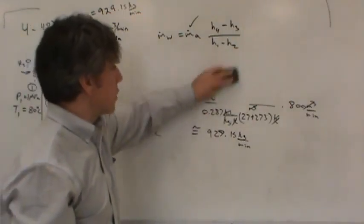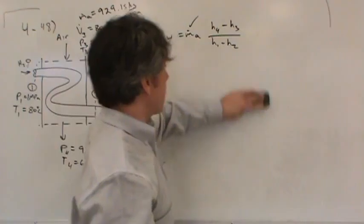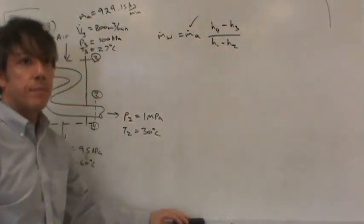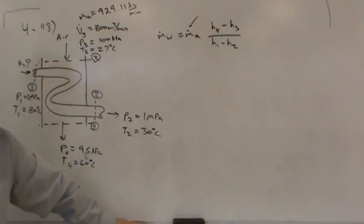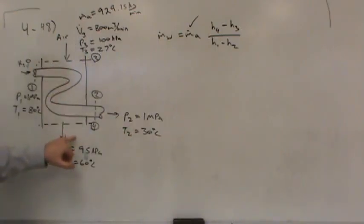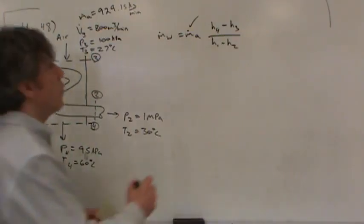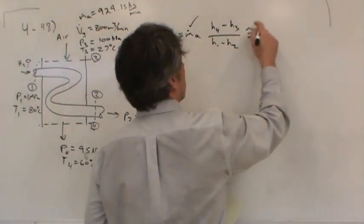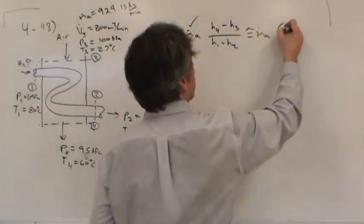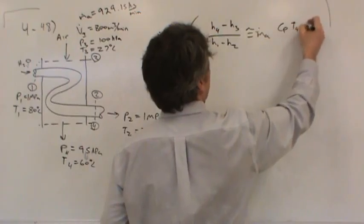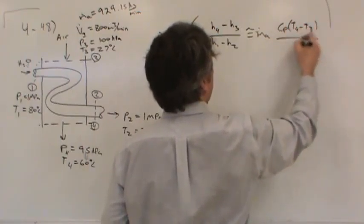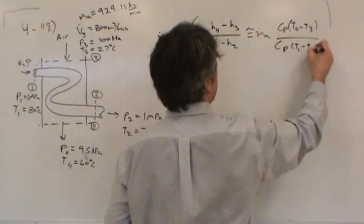Now what about the enthalpy changes? What are we going to do there? Let me ask you a question. Is the air condensing? No. Is the water boiling? No. Now you could look up the properties and find out the water is sub-cooled in both states. You could look at the properties here and realize the air is in the vapor phase. But, I mean, that just makes sense. In the gas phase.